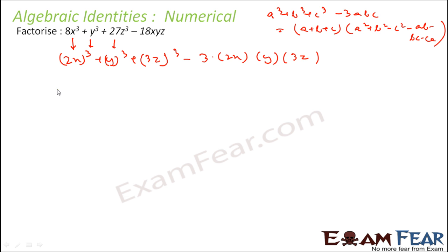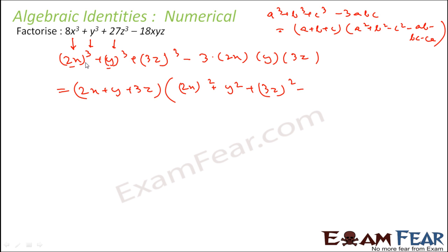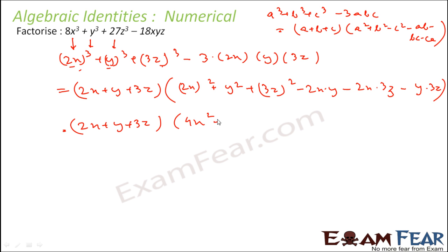So a³ + b³ + c³ − 3abc equals (a + b + c), that is (2x + y + 3z), multiplied by a² + b² + c² − ab − bc − ca, which gives us (2x)² + y² + (3z)² − (2x)(y) − (2x)(3z) − (y)(3z). This comes out to be (2x + y + 3z)(4x² + y² + 9z² − 2xy − 6xz − 3yz). So we have successfully factorized this expression using the identity.